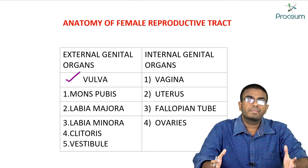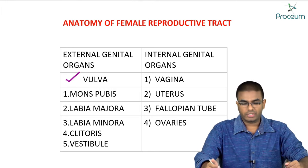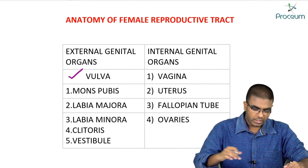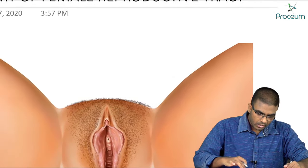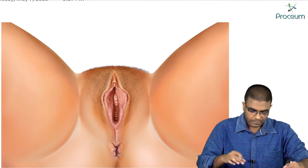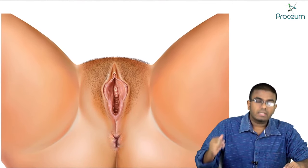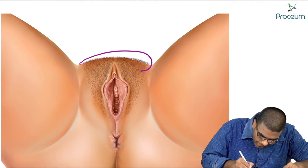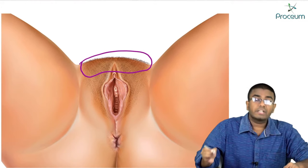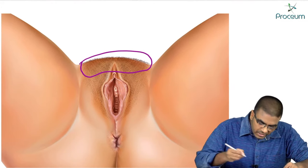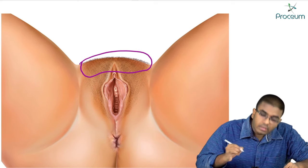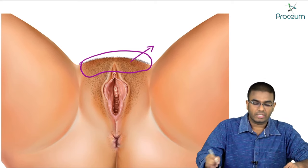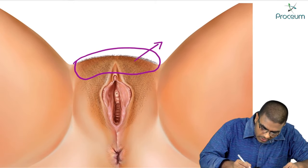Vulva is the external genital organ of a female. Let me show you all the individual structures so you can have a clear idea. In this image, this thick pad of connective tissue which contains pubic hairs — this region is known as mons pubis.